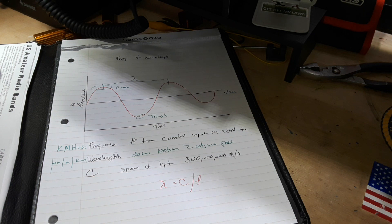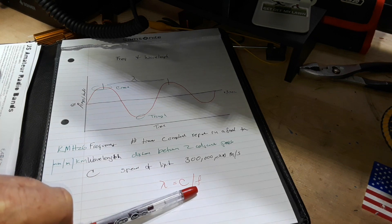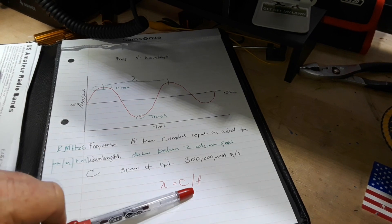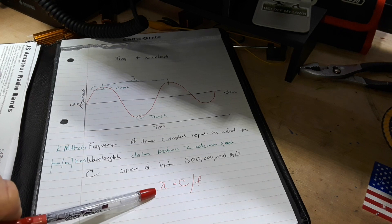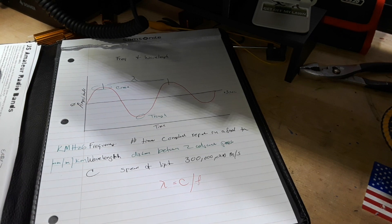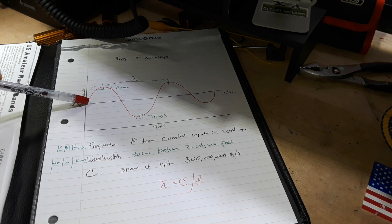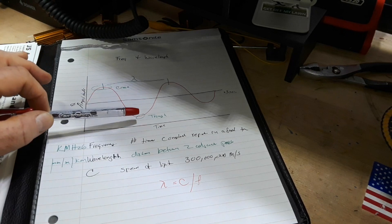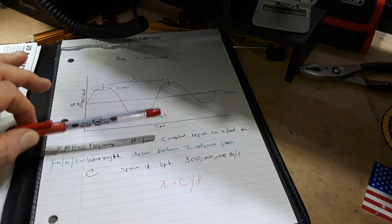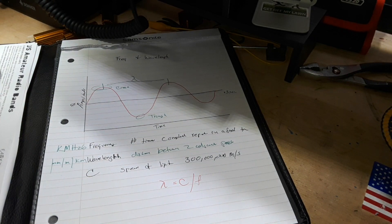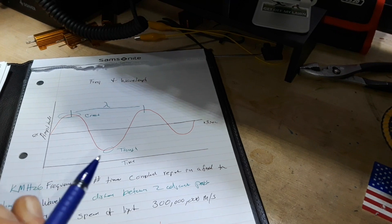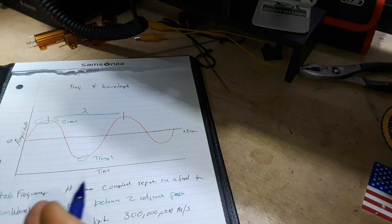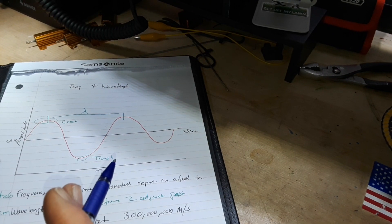If you know your frequency, just take the speed of light divided by the frequency and you get lambda, your wavelength. This is important because it gives us different ways to identify and characterize electromagnetic waves, especially when talking about groups of frequencies.